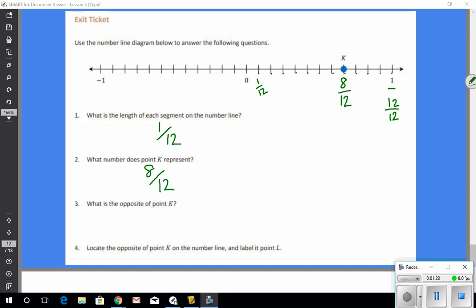But I look at eight twelfths and say, I know that I could also simplify that. I could divide them both by four. And if I divide eight by four, I get two and twelve by four, I get three. So eight twelfths is also two thirds of the way through between zero and one.